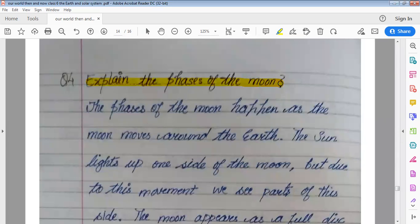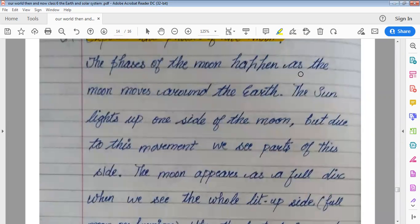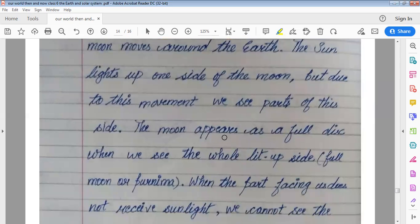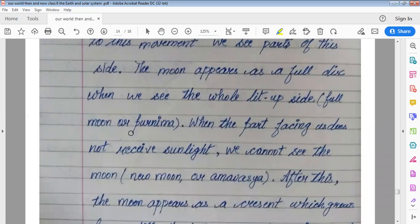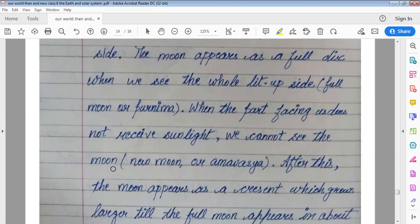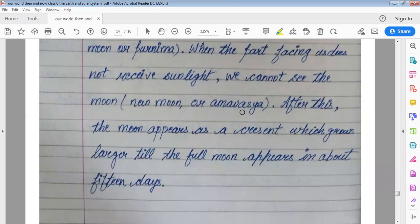Explain the phases of moon. The phases of the moon happen as the moon moves around the Earth. The sun lights up one side of the moon. But due to its movement, we see part of this side. The moon appears as a full disk when we see the whole lit up side, called full moon or Purnima. When the part facing us does not receive sunlight, we cannot see the moon, called new moon or Amavasya. After this, the moon appears as a crescent, which grows larger till the full moon appears in about 15 days.